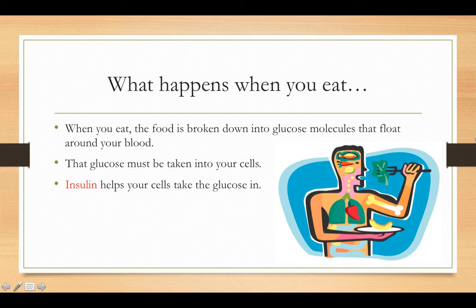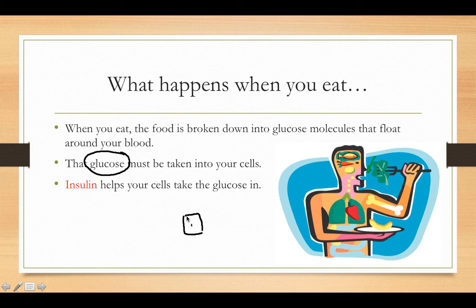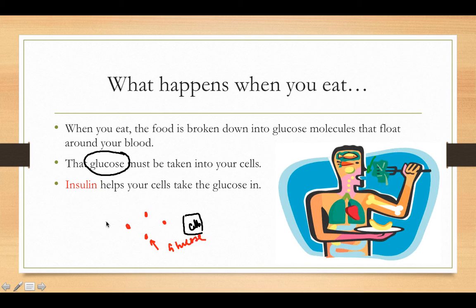What happens when you eat? When you eat, all this food is getting broken down into different molecules — eventually into glucose. That glucose has to be taken into your cells, and there's something called insulin that basically takes that glucose into your cells. There's a little cell here, and these little dots represent glucose. In order for this glucose to go into your cells, you need something called insulin.